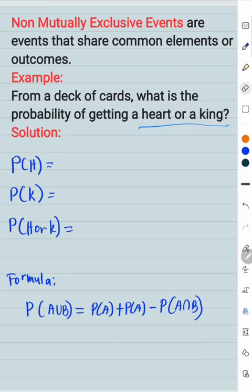We know that it's possible to get a heart at the same time a king. Now, to calculate, first get the probability of getting a heart. And there are 13 cards that are hearts out of 52.